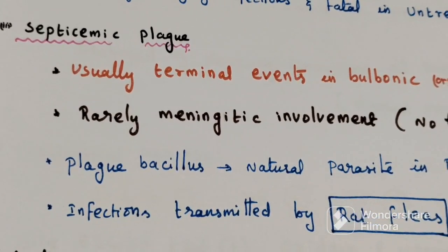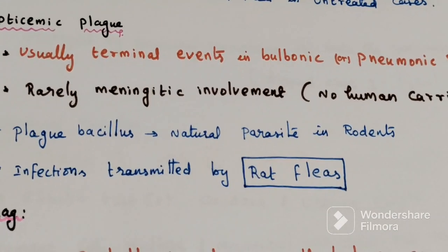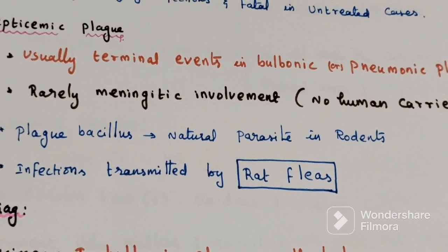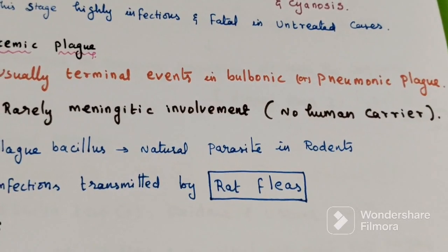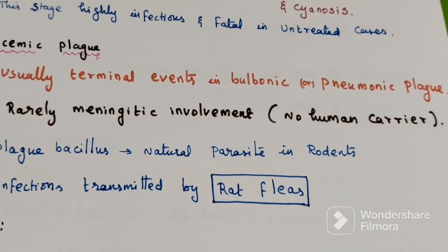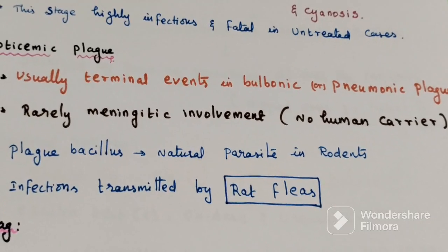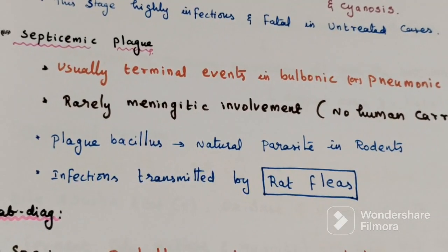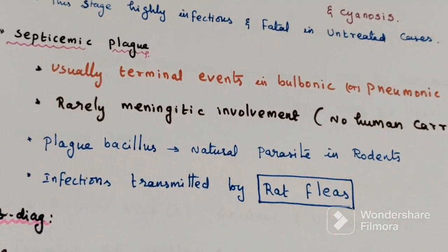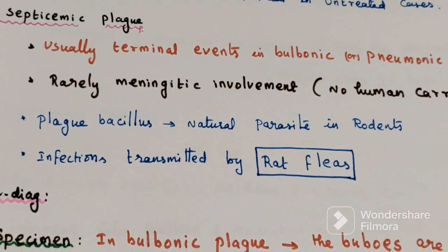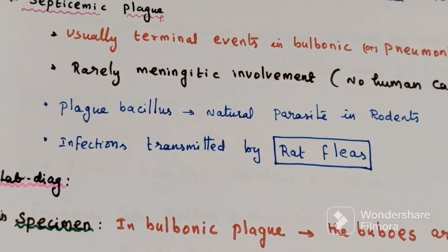Third one is Septicemic plague. This is usually a terminal event in Bubonic or Pneumonic plague. It can sometimes occur primarily. Rarely there can be involvement of meningitis. There is no human carrier. Plague is a zoonotic disease — it is a natural parasite in rodents, and infection is transmitted among them by rat fleas, which acquire infection by feeding on infected rodents.